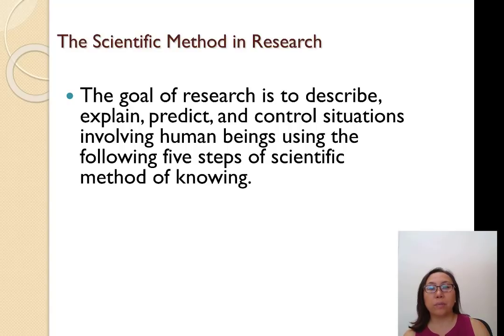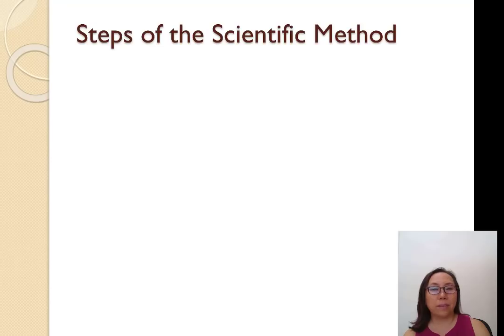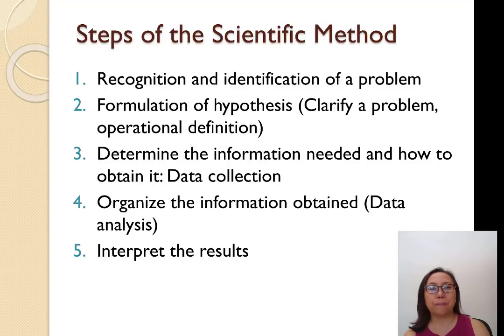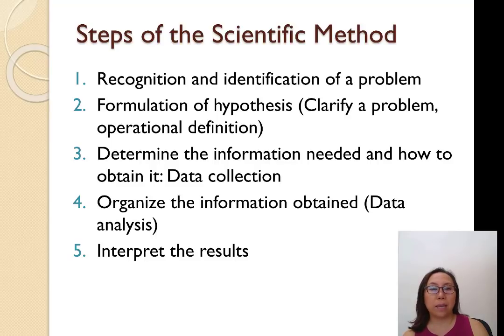The goal of scientific method is to describe, explain, predict, and control situations involving human beings, using five steps. Step one: recognize and identify a problem. Step two: formulate the hypothesis, clarifying the problem and operationally defining key terms. Step three: determine the information needed and how to obtain it — that's data collection. Step four: organize the information obtained — that's data analysis. Step five: interpret the results and draw conclusions.